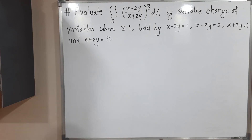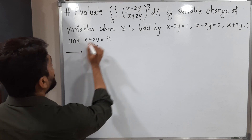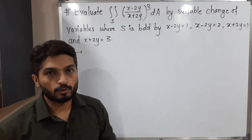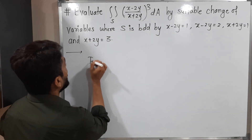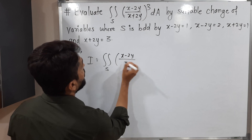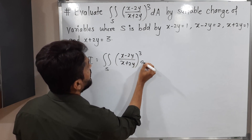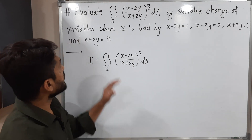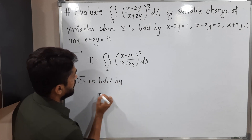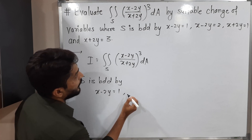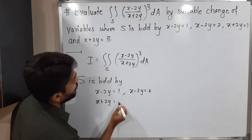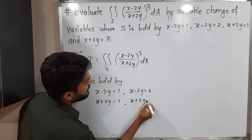Hi everyone. In this video we are going to discuss this example. We have a double integration and we have to solve it with a suitable change of variables. I is equal to double integration over S of (x minus 2y) upon (x plus 2y) cubed dA. S is bounded by x minus 2y = 1, x minus 2y = 2, x plus 2y = 1, and x plus 2y = 3.